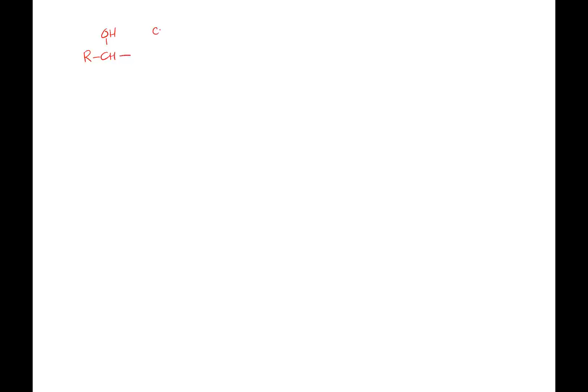Now, protection. We've talked previously about taking an alcohol and, if we want to protect it from reacting, reacting it with trimethylsilyl chloride. That puts the trimethylsilyl group on the oxygen, and now all of a sudden it doesn't react. OHs would normally be oxidizable — this one isn't. Then when I'm done, I take fluoride, and the fluoride strips the silyl group off to de-protect and reform my alcohol.